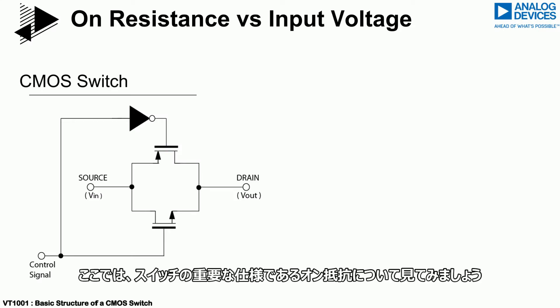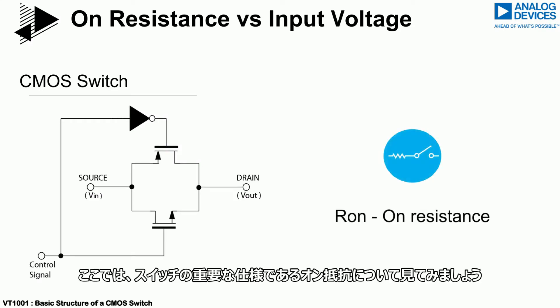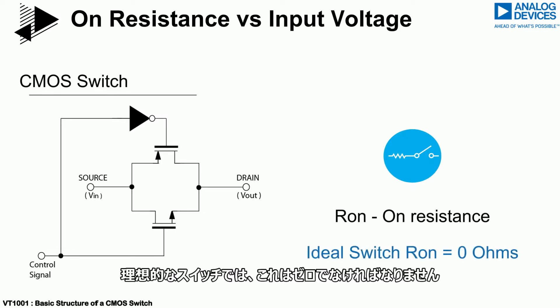We will now take a look at a key specification of switches: the on-resistance. In an ideal switch this should be zero.